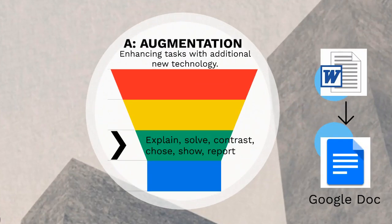Augmentation is when a teacher uses technology as a direct tool replacement with improved functions. The technology is used as a tool to complete a task. For example, instead of using Microsoft Word to write the report, a Google Doc is created.